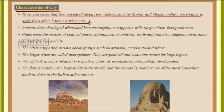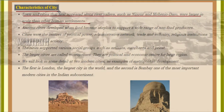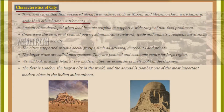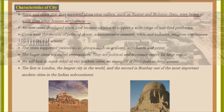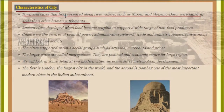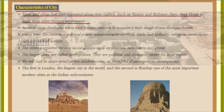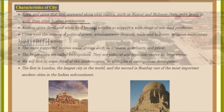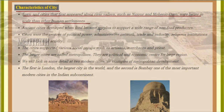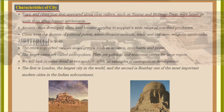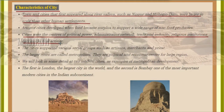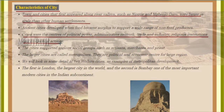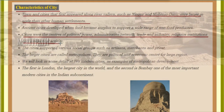The name of the new chapter we are going to learn is 'Work, Life and Leisure.' First, let's understand the characteristics of a city. Towns and cities first appeared along the river valleys such as Nippur and Mohenjo-daro. They were larger in scale than other human settlements. Ancient cities developed when food became surplus to support a wide range of non-food producers. Cities were treated as centers of political power, administrative networks, trade and industry, religious institutions, and intellectual activity.